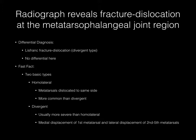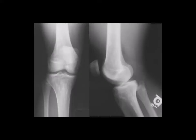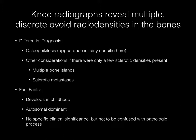No real other differential considerations should be included. Now pause your media player. Knee radiographs reveal multiple discrete ovoid radio densities in the bone. The differential diagnosis should include osteopoikilosis, and the appearance here is fairly specific for this entity. If there are only a few sclerotic densities present, other considerations should include multiple bone islands and sclerotic metastases.